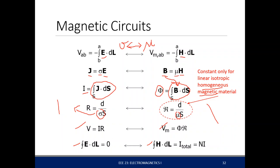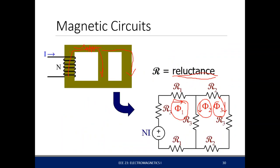Both electric and magnetic circuits have their own versions of Ohm's law and Kirchhoff's law. For Kirchhoff's law within the magnetic circuit, it is actually equal to N times I. If you look at the magnetic circuit, there is no visible voltage source connected to it — it is just a block of ferromagnetic material or a block of material with some permeability mu.